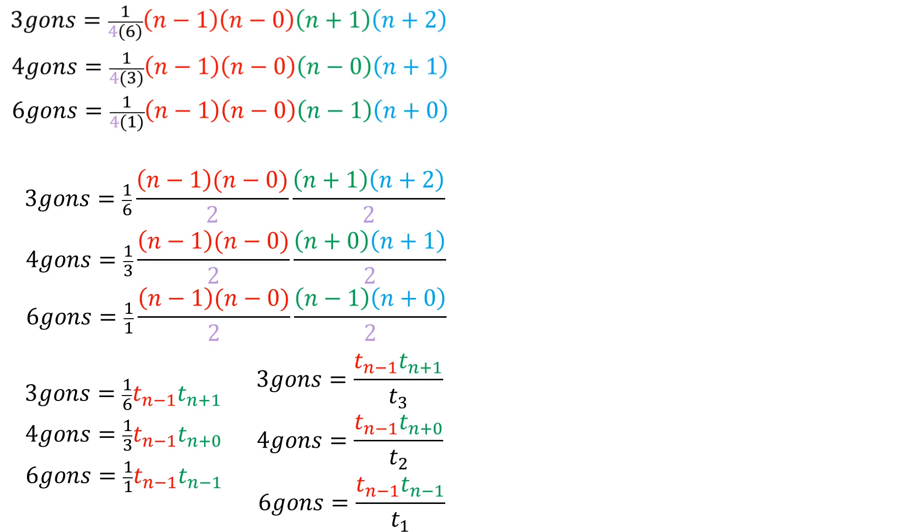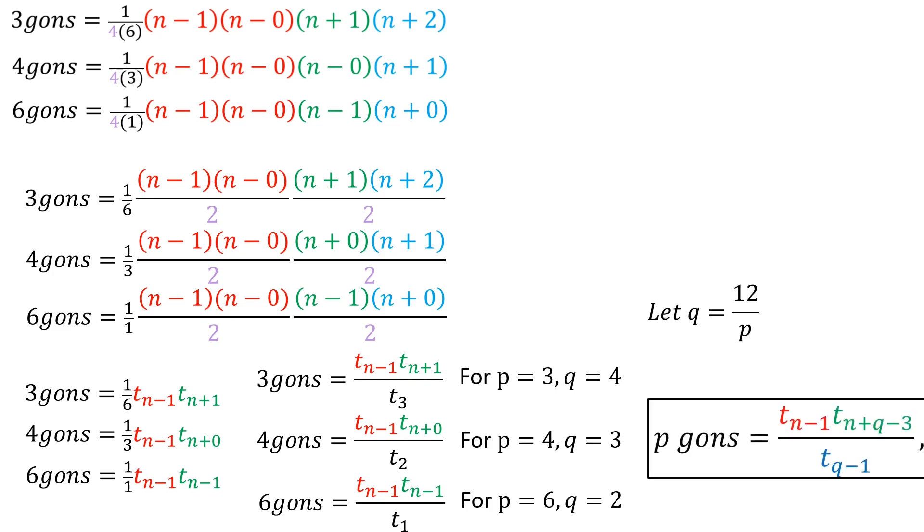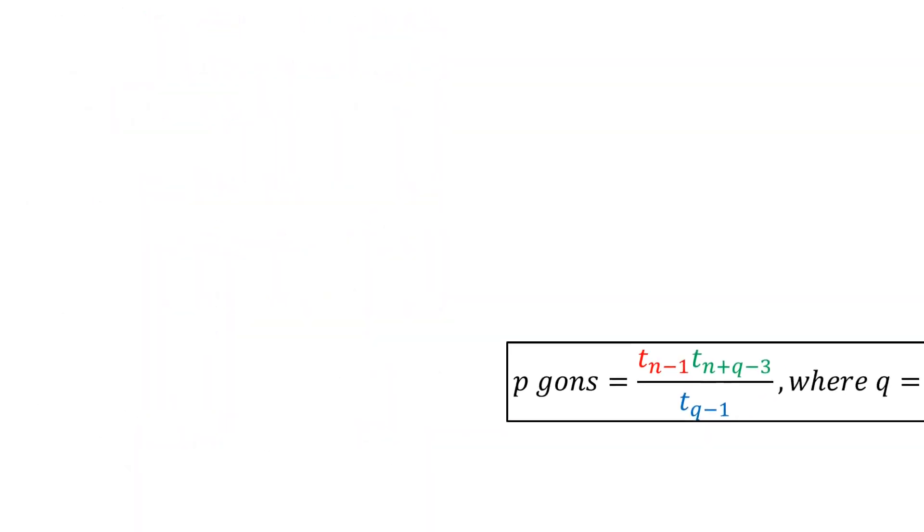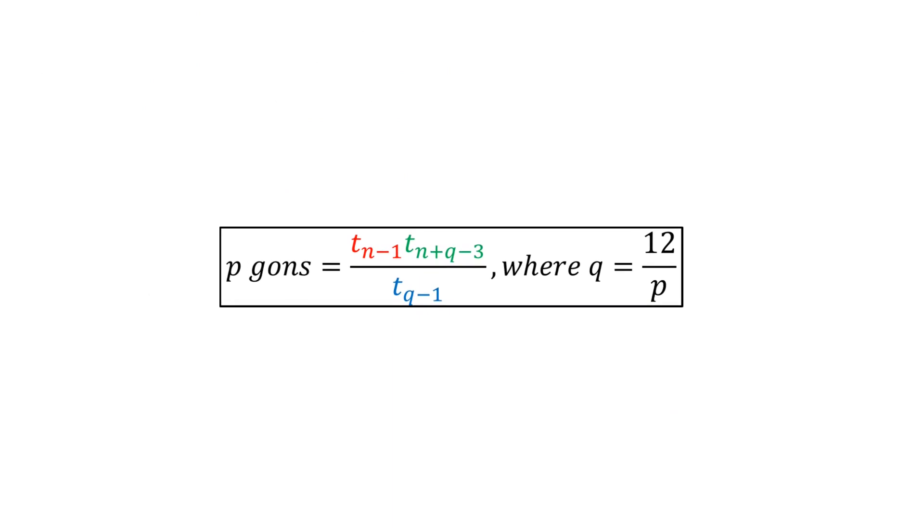We can. Let q equal 12 over p. Then, for p equals 3, q equals 4. For p equals 4, q equals 3. And for p equals 6, q equals 2. Now all three formulas can be combined in terms of n and q. And there we are. I hope you guys appreciate this derivation. I'm definitely proud of it myself.